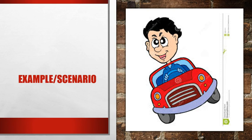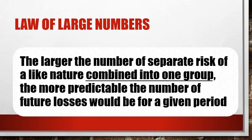Therefore premiums are high for this individual. Insurance companies use the law of large numbers to predict future risks. We don't know who's going to get into an accident and who's not — we can only forecast or predict what's going to happen. That's why it's important to have a large number of homogeneous units, meaning the same type of group, in order to predict future losses. This is why some people have very high premiums and some people have very low premiums.